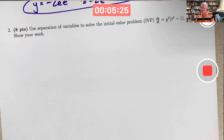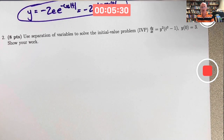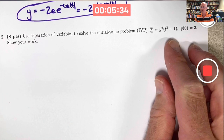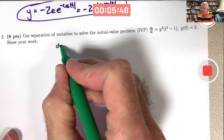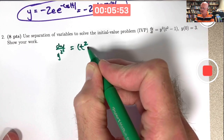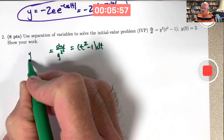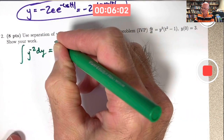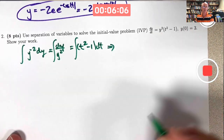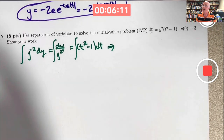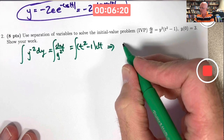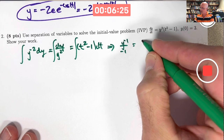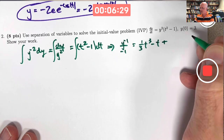Next separation of variables problem: dy/dt equals y² times (t²−1), with initial condition. Again we have a product of a function of y alone and a function of t alone, so we can separate variables. Divide both sides by y² and multiply by dt to get dy/y² = (t²−1)dt, which is the same as y^(−2) dy. Now integrate both sides. You can sometimes integrate but not solve for y explicitly, leaving the answer in implicit form — but we can solve for y here.